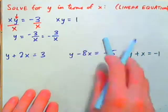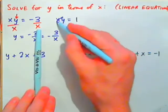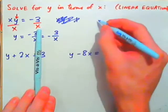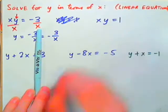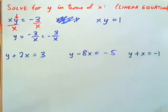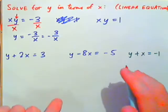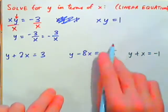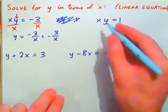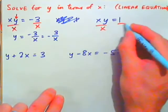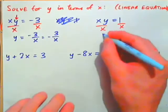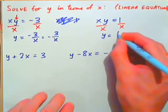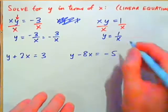Now solve this one: X times Y equals 1. Y has been multiplied by X, so to undo that, divide both sides by X, and you get Y equals 1 over X.